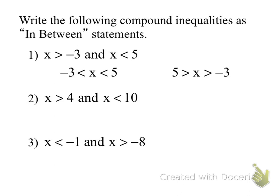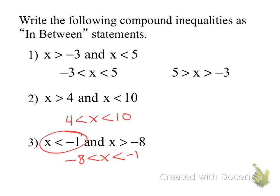What's number 2 going to look like? Start from left to right: 4 is less than x, which is less than 10. Perfect. Number 3 is a little trickier: negative 8 is less than x, which is less than negative 1. It's trickier because they set you up — we don't just use the first number listed. We always take the smaller number and it goes to the left.